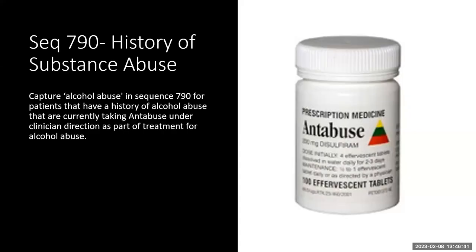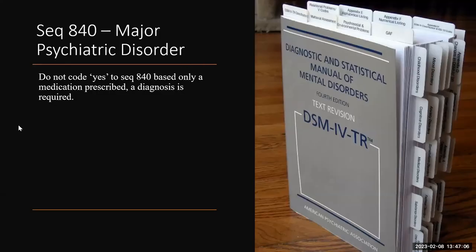Sequence 790 — History of Substance Abuse: alcohol abuse is aligned with illicit drug use. Capture alcohol abuse in 790 for patients with a history of alcohol abuse who are currently taking Antabuse under clinician direction as part of their treatment — i.e., patients actively managing their abuse with treatment. Sequence 840 — Major Psychiatric Disorder: do not code 'Yes' based only on a medication prescribed. A diagnosis is required, because medications used for depression or anxiety may be prescribed for other indications.